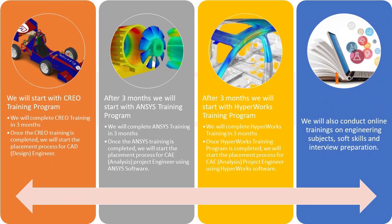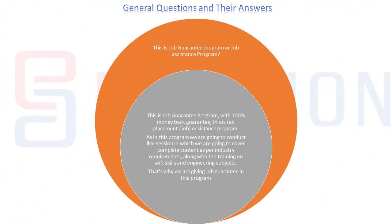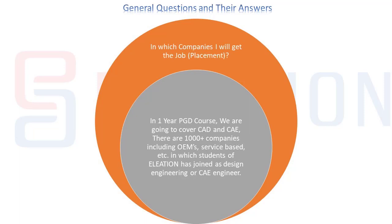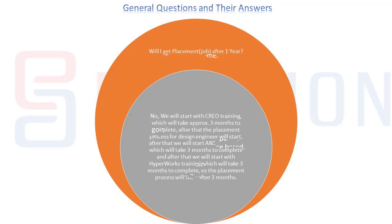Once the HyperWorks training is completed, the placement process for CAE Engineer for HyperWorks software will start. We will also conduct live sessions for training on engineering subjects and soft skills. Now let's see some general questions and their answers. Is this a job guarantee program or job assistance program? This is a job guarantee program with 100% money-back guarantee. This is not a placement assistance program.